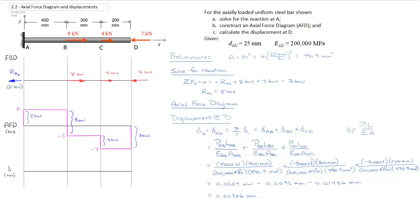Now we want to transfer the calculated displacements onto our displacement graph. We start at A, which is at 0 millimeters because it's fixed. The displacement between A and B is 0.0204, then it goes down 0.0092, then drops a further 0.01426, finishing at 0.00306. We connect the dots on our graph — it varies linearly between those points as the length increases — and we end up with a displacement graph from A to D.